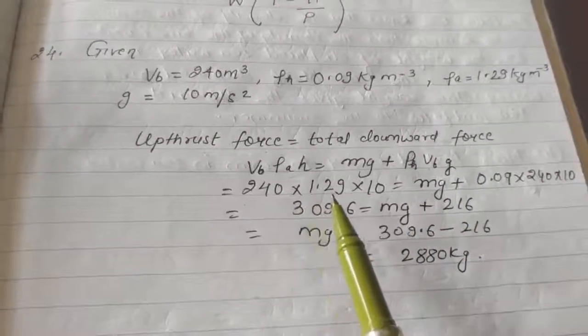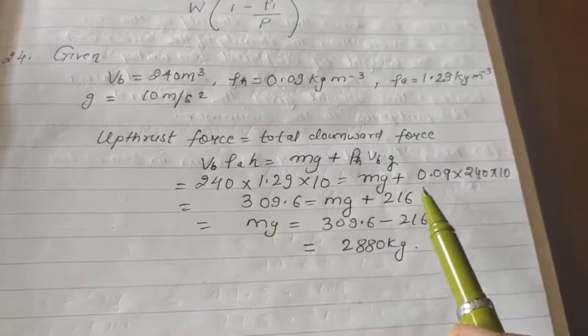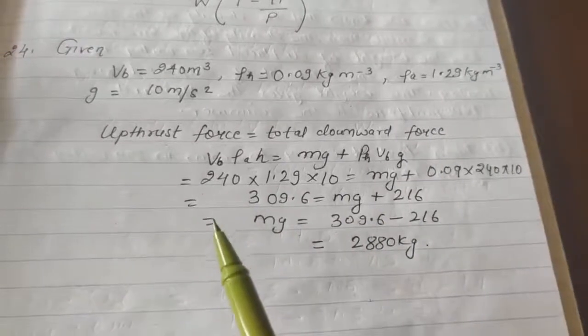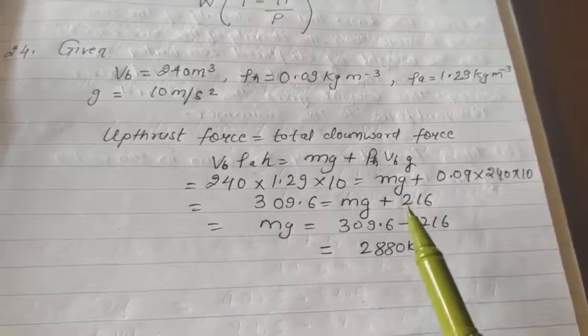240 into 1.29 into 10 is equal to mg plus 0.09 into 240 into 10. That is equal to 309.6 is equal to mg plus 216.